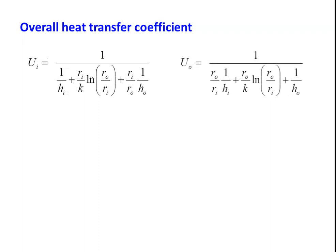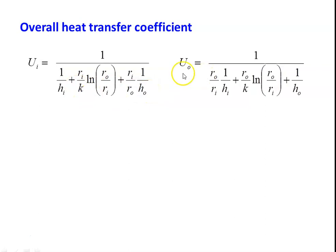I would like to give some clarification on the overall heat transfer coefficient before we take up the problems. We defined the overall heat transfer coefficient based on the inside area and outside area. There are three resistances involved, ignoring the effect of fouling: the resistance due to inside convection heat transfer, the resistance due to conduction, and the resistance due to outside convection heat transfer.